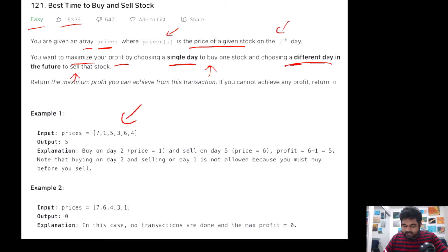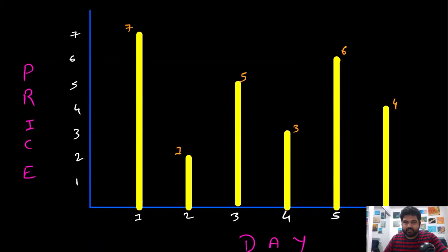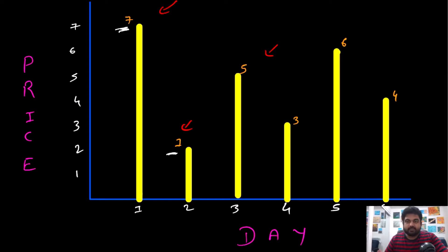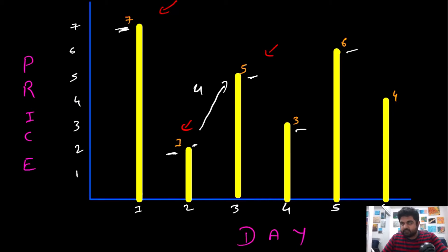Looking at an example with six different stock prices drawn on a graph: on day one the price was 7, on day two it fell to 1, then rose to 5, fell to 3, rose to 6, and ended at 4. Between some pairs of days we make profit, between others we lose money. Simply looking at adjacent-day differences doesn't maximize profit.